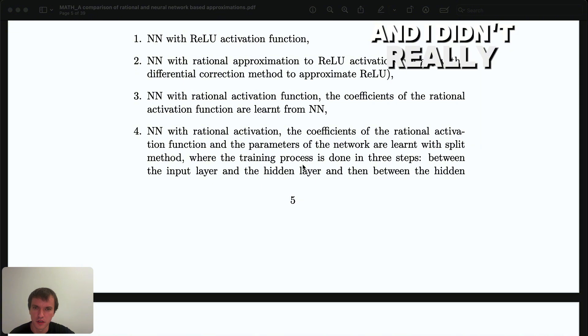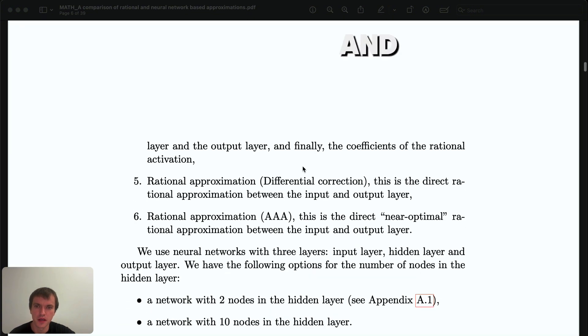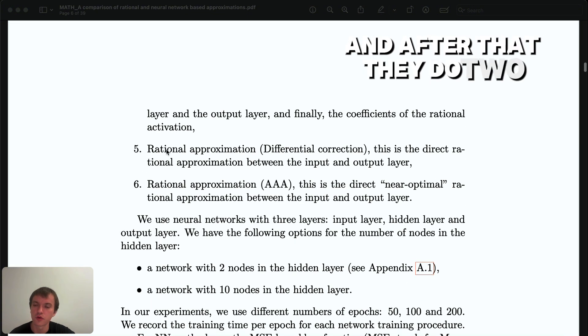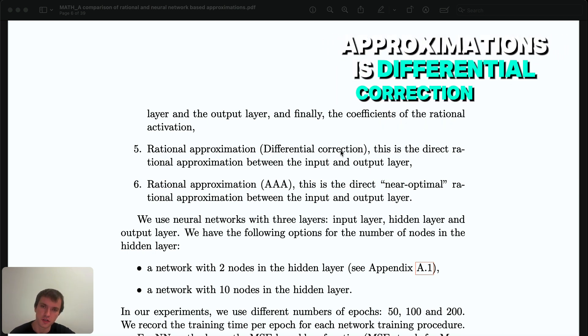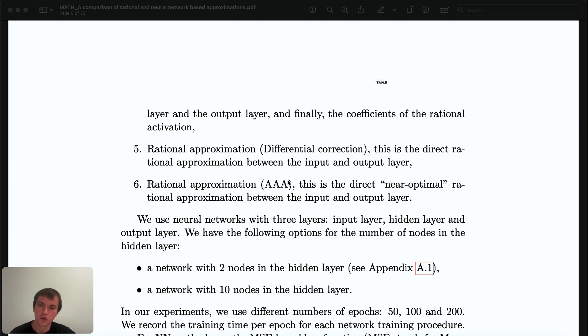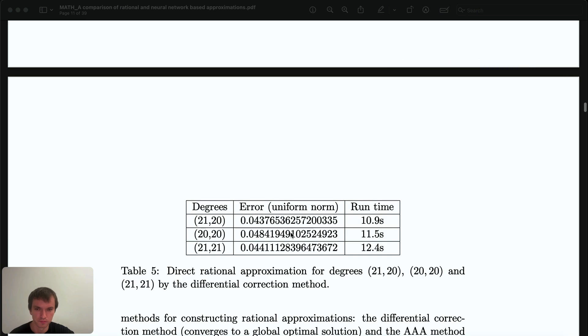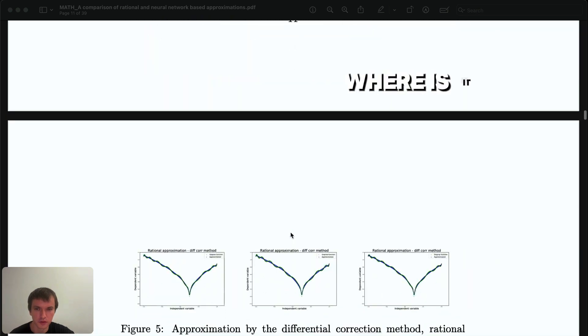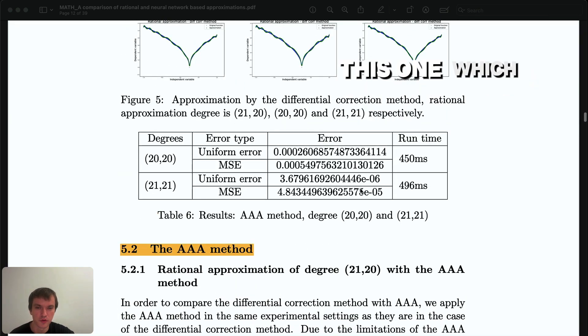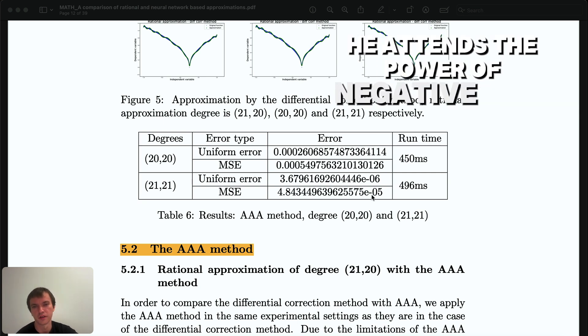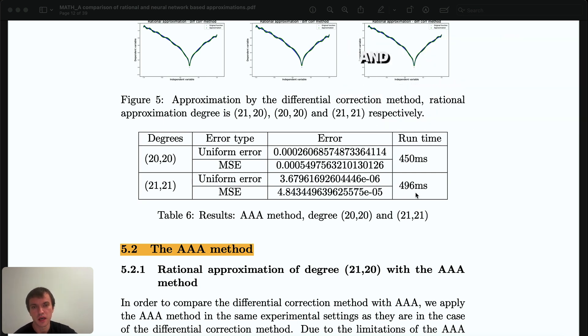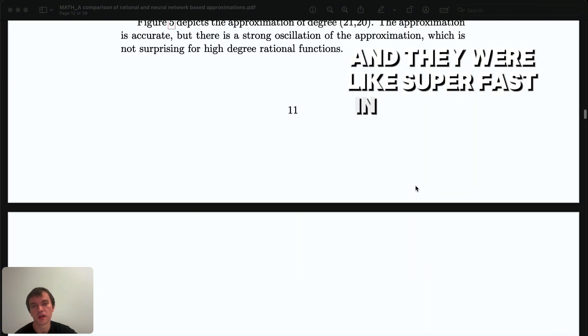After that they do two classical analysis approximations: differential correction and AAA. AAA is based on all these computations, one of the best because they got the smallest error which was the order of—where is it—yeah, this one, which is the order of 10 to the power of negative 5 and negative 6.